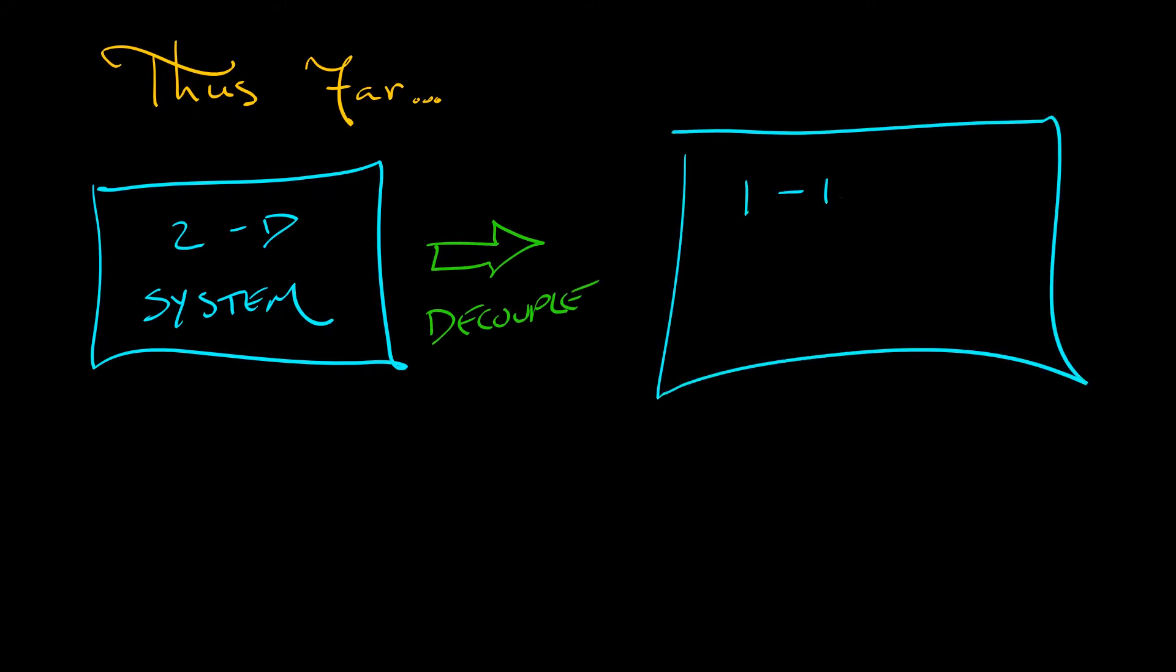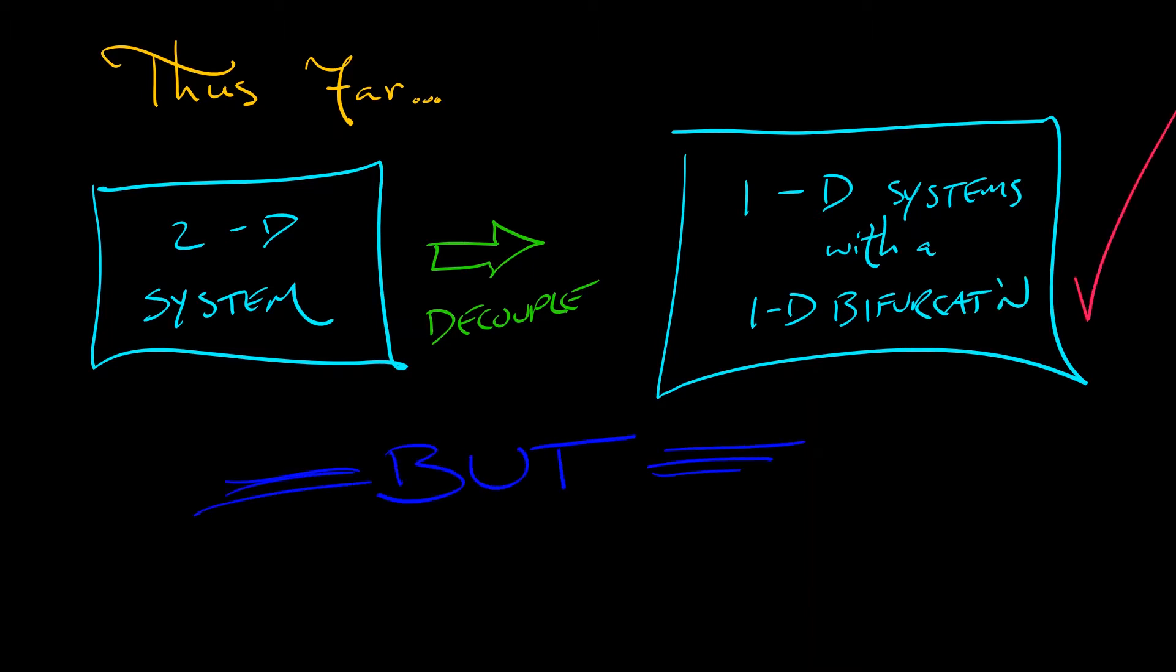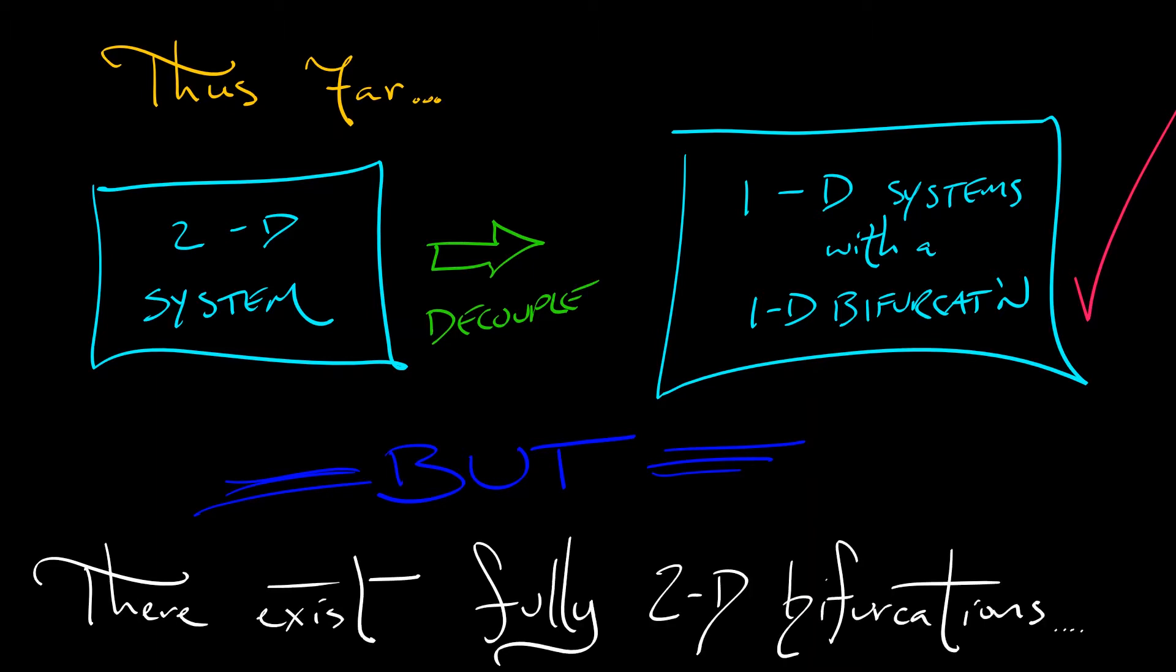Thus far, what we've been doing is taking two-dimensional systems and decoupling them, breaking them up through linearization into one-dimensional systems where one of them has a one-dimensional bifurcation inside of it. But there do exist bifurcations that are fully two-dimensional, that can't be split up and decoupled and reduced to a one-dimensional bifurcation.